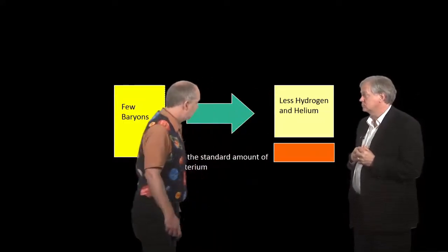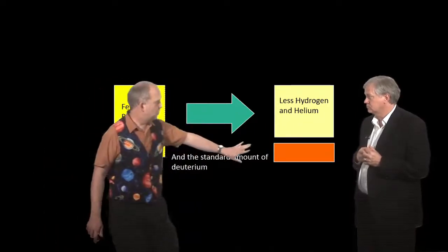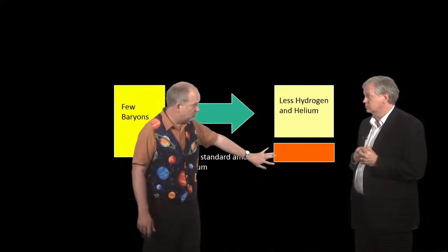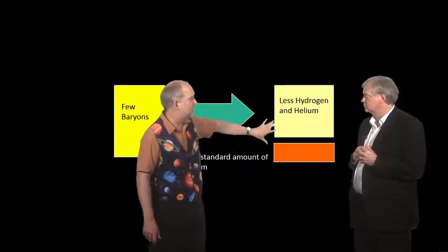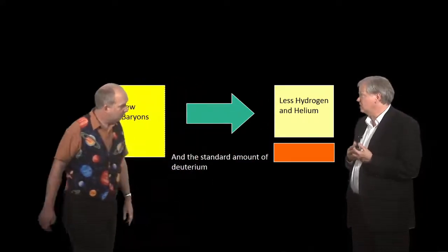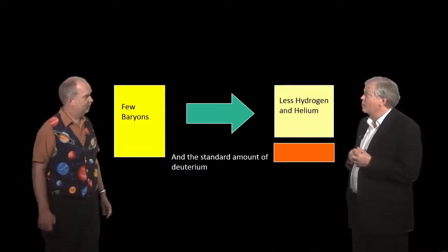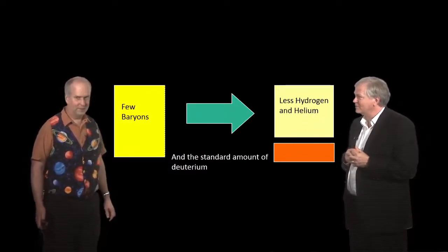So what this means is, as you start off with fewer baryons, the ratio of deuterium to everything else is going to go up. Not because the amount of deuterium is changing, the deuterium density is always going to be the same, it's just as less of everything else. So this is a convenient little way to figure out how many baryons there are. It's a barometer, but not in the weather sense.